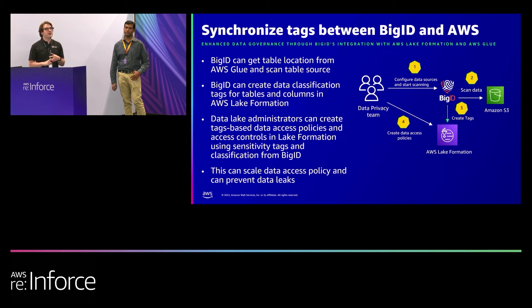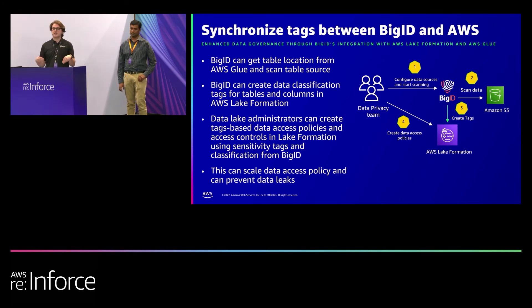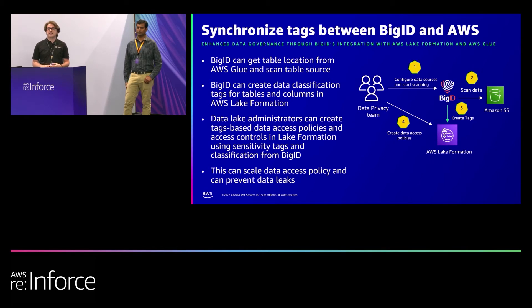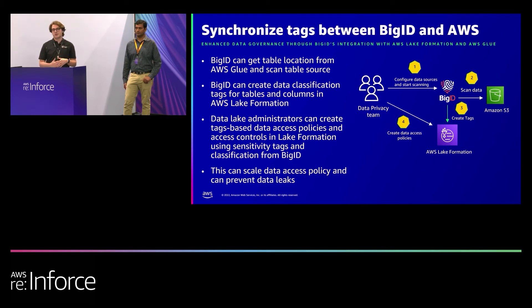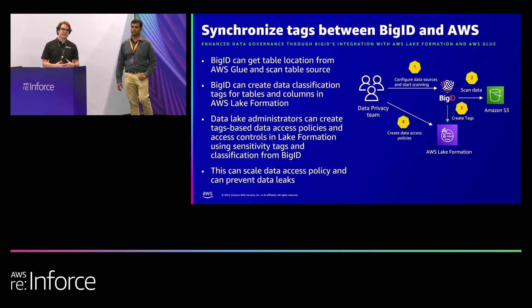The other integration we're going to show you is synchronizing tags from BigID to AWS. Not only are we able to discover information about your data sources inside BigID, we can also export that data to a multitude of different providers — one of those is AWS Glue. We take the information we discover, such as which columns contain personal information, phone numbers, or application secrets, and tag that inside of AWS Glue so you can set up access permissions based on those tags. That way your access policies are based upon what's actually in the real world, as opposed to what you think is inside your data sources.